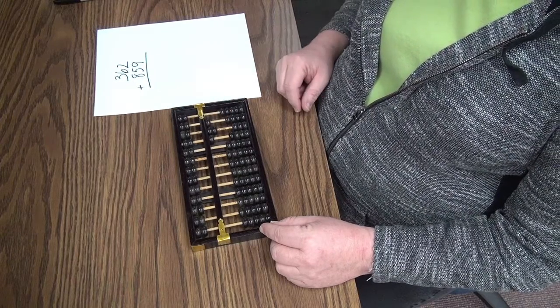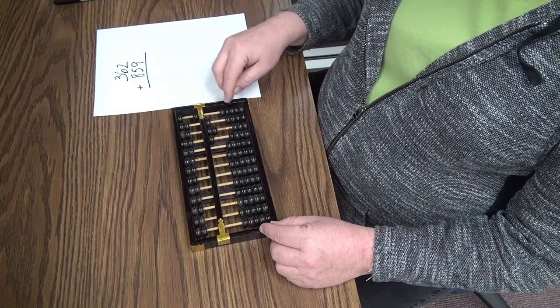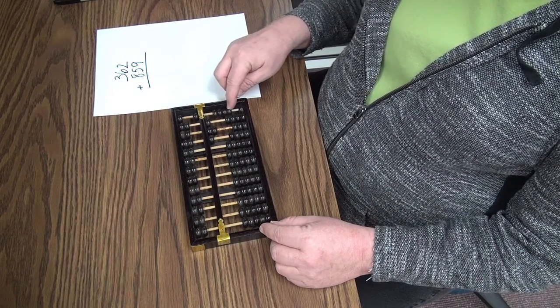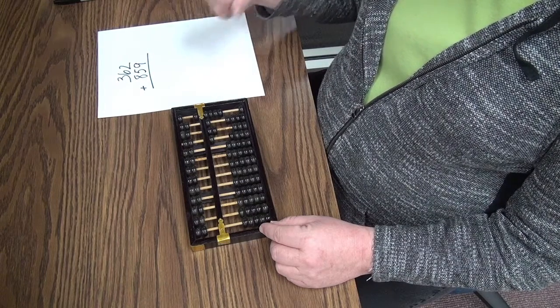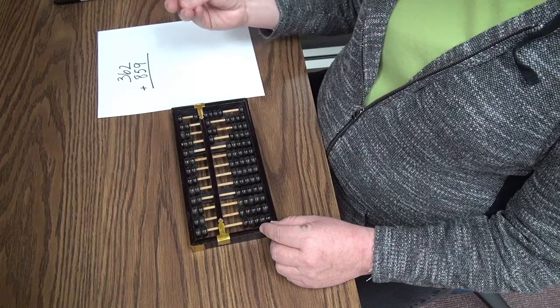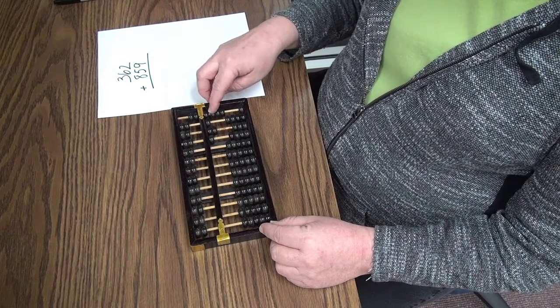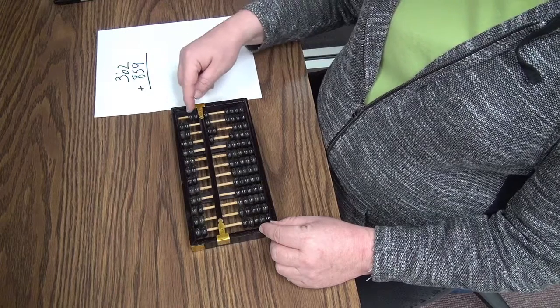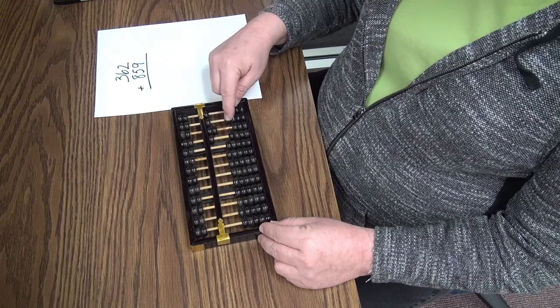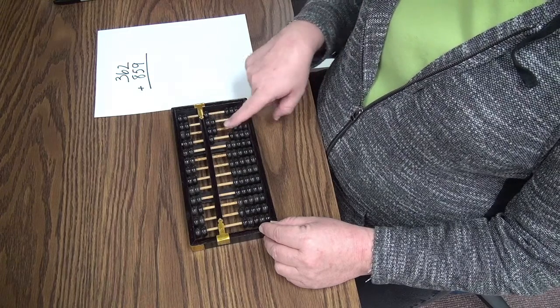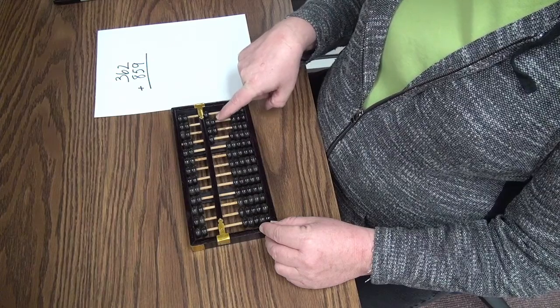Now I am going to add 9 and 2. So here is 5, 6, 7, 8, 9. And I am going to add 2 to that. So if I add 2, that leaves 3. So I am going to bring down a 5 bead and subtract 3. I am going to exchange these two 5 beads for a 10 bead. So my answer then is 1,221.